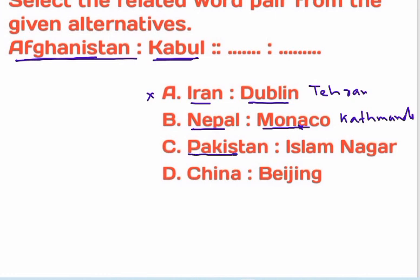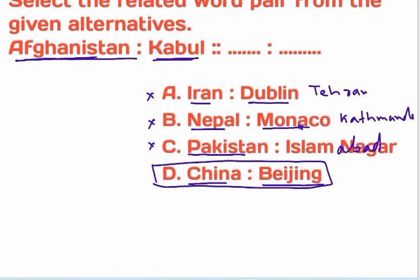Pakistan is Islamabad. Islam is not a word — Islamabad. I am going to correct myself. China — China is Beijing. I am going to correct myself.